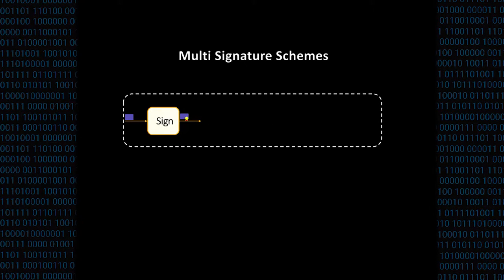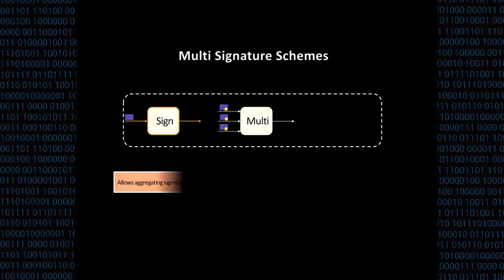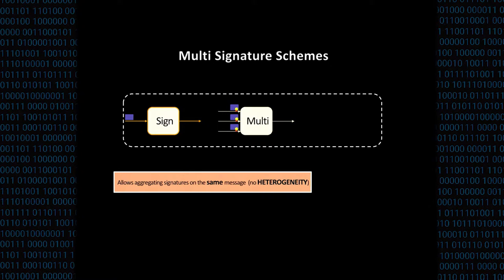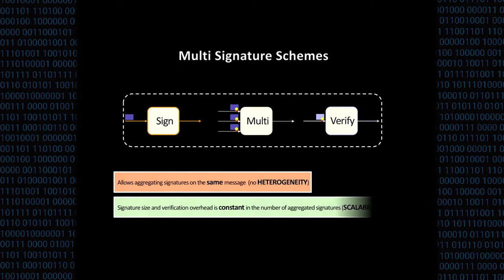The aggregation of a multi-signature aggregates signatures on the same message — it doesn't allow aggregation of signatures on different messages and doesn't support heterogeneity. However, the size of the generated aggregation and the verification time is constant in the number of signers, so it provides scalability.